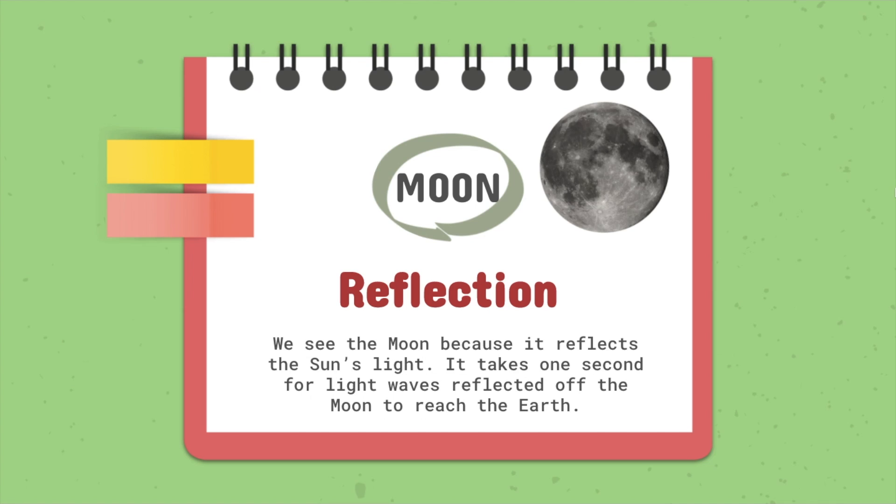Reflection. We see the moon because it reflects the sun's light. It takes one second for light waves reflected off the moon to reach the earth. Whoa, that's fast.